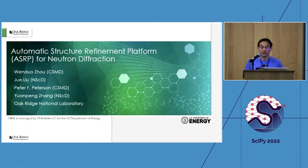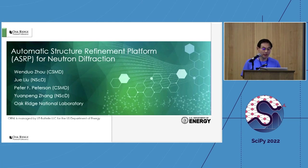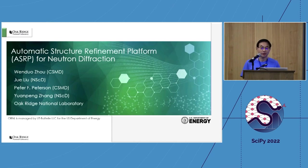Hi, thanks for the cyber organizer to give us the chance to present one of our current ongoing projects called the Automatic Structure Refinement Platform for Neutron Powder Diffraction. Our project has four team members including me. Xue Liu is the instrument scientist at NOMAD, a beamline at Oak Ridge National Lab, and he is the brain about how to do data analysis. Yuan Peng is also an instrument scientist and very good at scientific computing. Pete and I are software developers in the application engineering group, in charge of building the software.